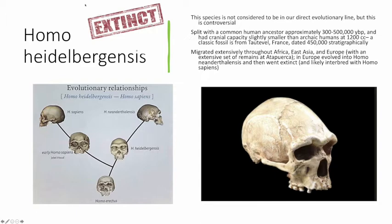We have an extensive set of remains at Atapuerca in Spain. In Europe, Homo heidelbergensis evolved into Homo neanderthalensis and then went extinct, and likely interbred with Homo sapiens, as we've discussed.